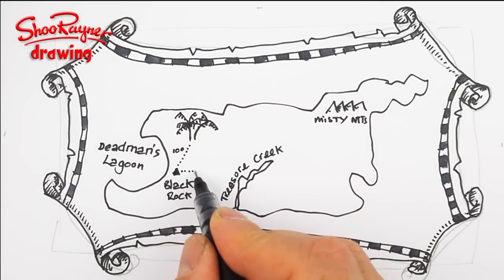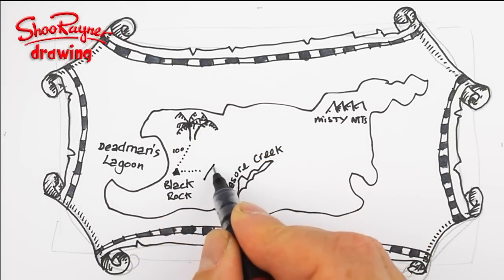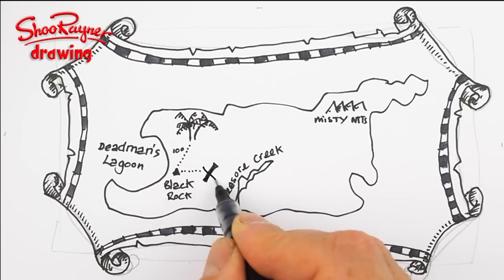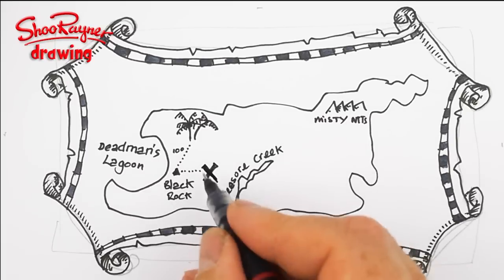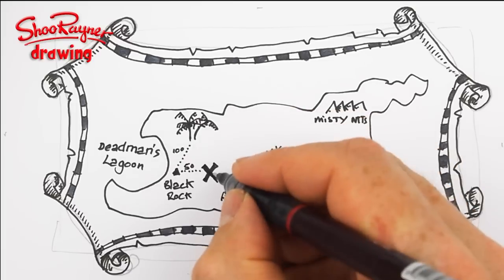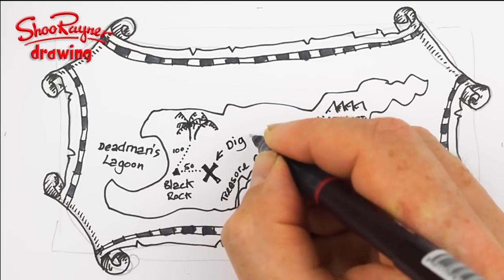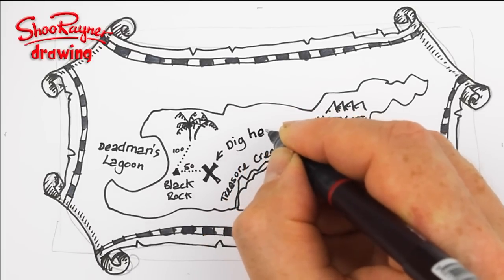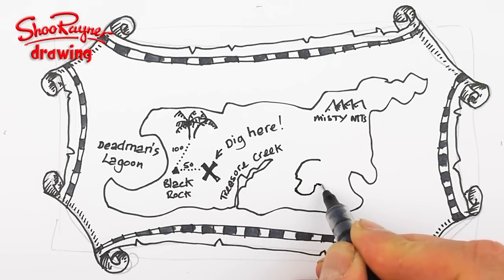We'll say 100 paces. Then you want a big X for the treasure. I'm going to call that 50 paces. Dig here. And I imagine we're going to want to have a skull here.